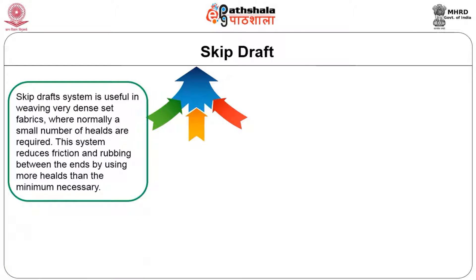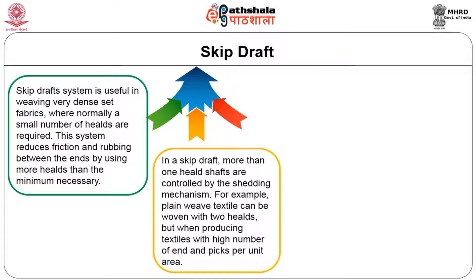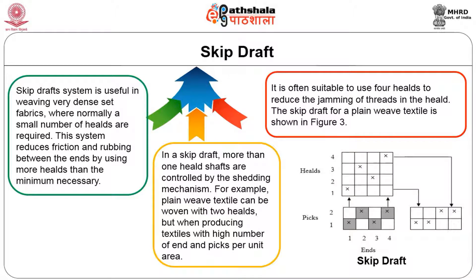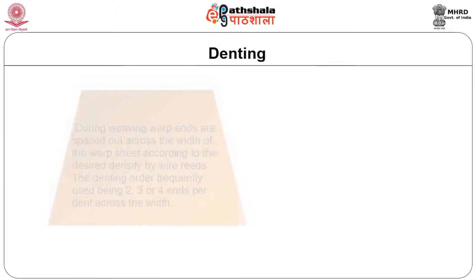The skip draft is useful in weaving very dense and close-set fabrics where normally a small number of heels are required. This system reduces the friction and rubbing between the ends by using more heels than the minimum necessary. In a skip draft, more than one heel shaft is controlled by the shedding mechanism. For example, plain weave textiles can be woven with two heels, but when producing textiles with high ends and picks per unit area, it is often suitable to use four heel shafts to reduce the jamming of threads in the heels. The skip draft for plain weave is shown in figure.